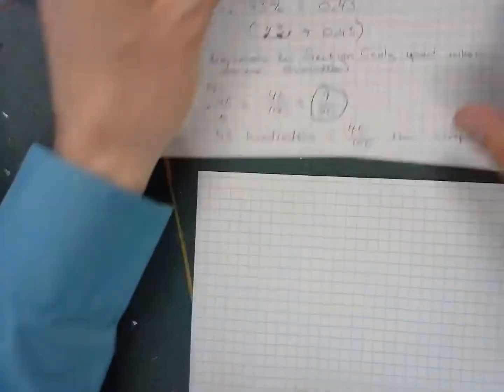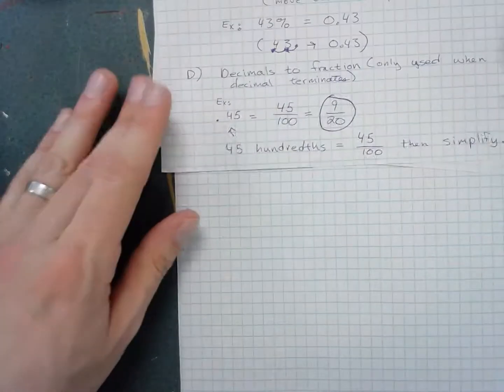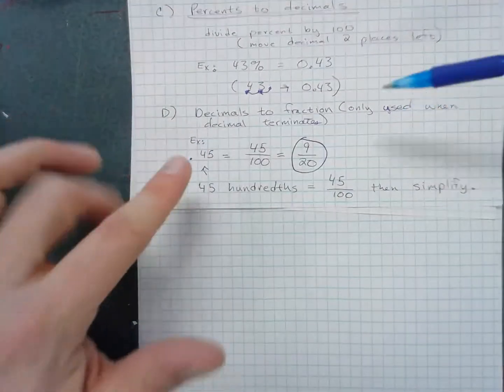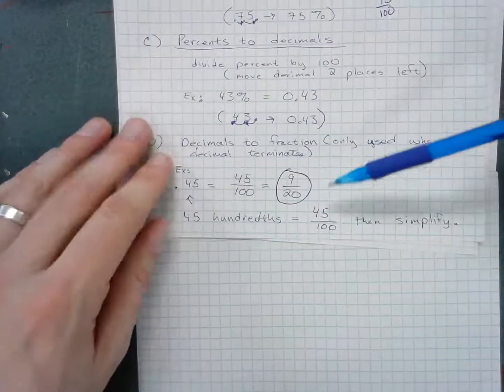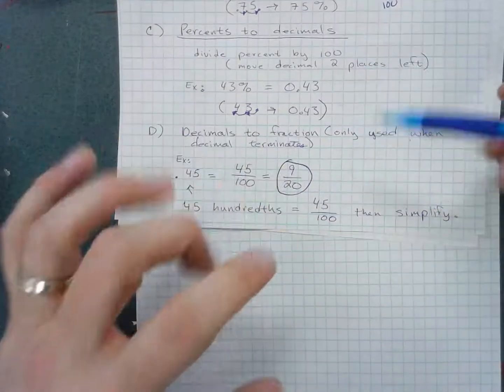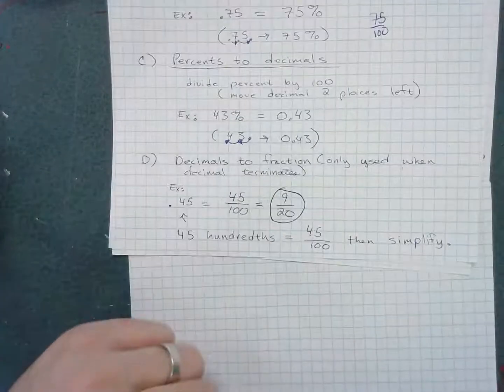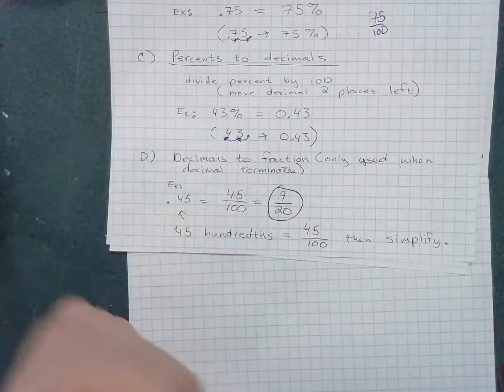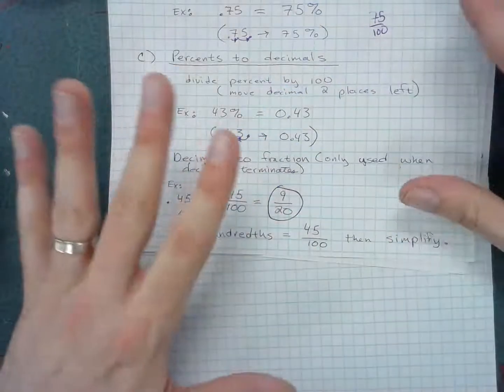Now, when converting from decimals to fractions, this can get a little complicated. When the decimal repeats, there's another strategy I'll show in another video. In this example, it's just a decimal that terminates, meaning it stops.